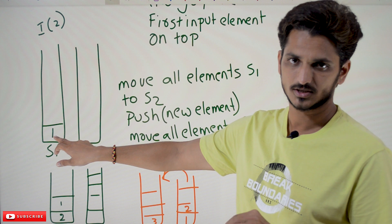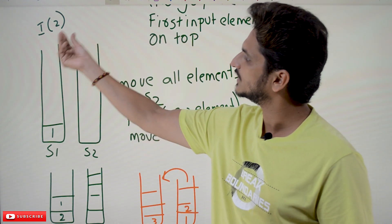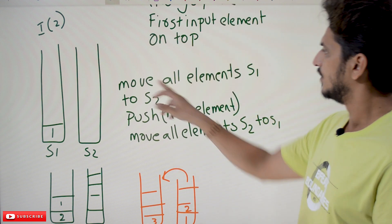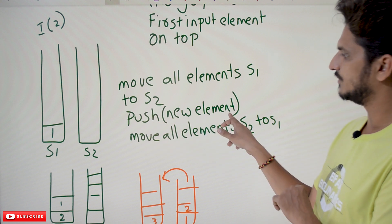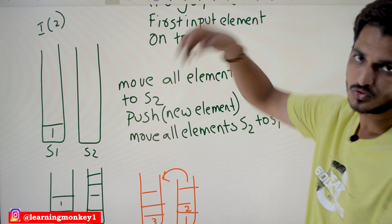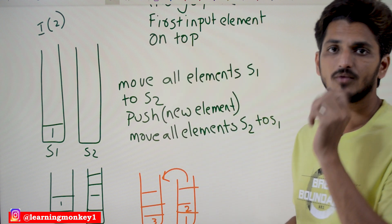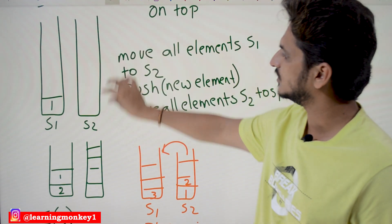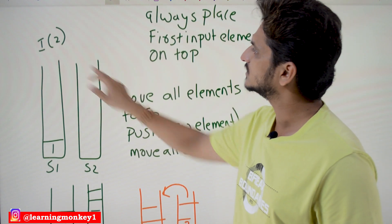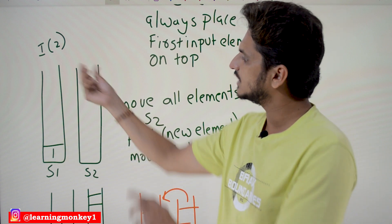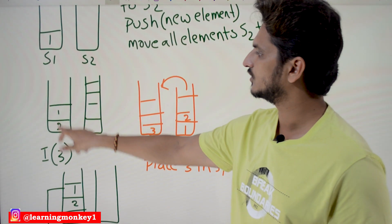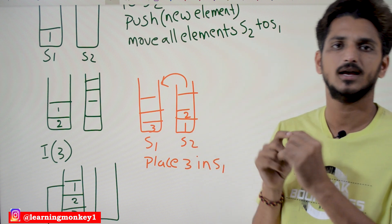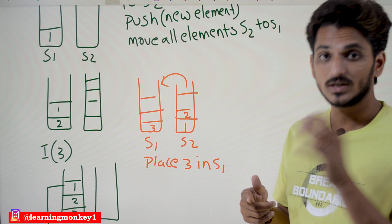Now place the new element onto S1, then again pop all the elements from S2 and place them onto S1. If you follow this, always the first input element will be on the top of the stack. To summarize: move all elements from S1 to S2, push the new element onto S1, then move all elements from S2 back to S1 — then the first element will be on top. For example, S1 has 1; move it to S2; push 2 onto S1; move 1 back — S1 now has 2 then 1 from bottom, with 1 on top. The first inserted element is on the top of the stack.